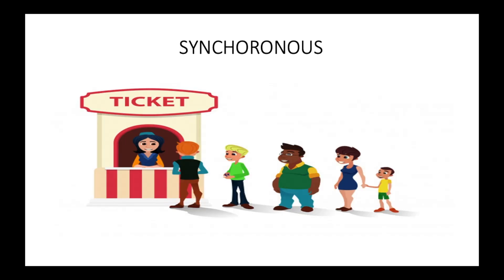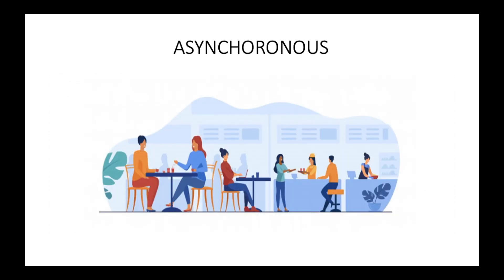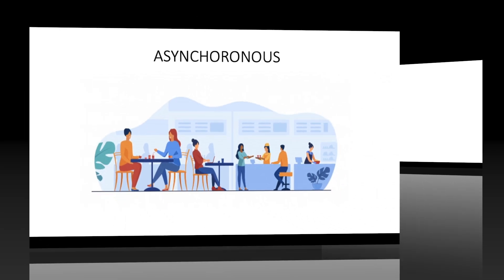In a real-world example, suppose you are in a queue to get a movie ticket — you can't get one until everybody in front of you gets one, so this is a synchronous process. However, if you are in a restaurant and order food, other people can order their food too. They don't have to wait for your food to be cooked and served, as the process of taking orders, cooking, and serving is handled by a number of waiters, chefs, etc., and the whole process is running asynchronously.